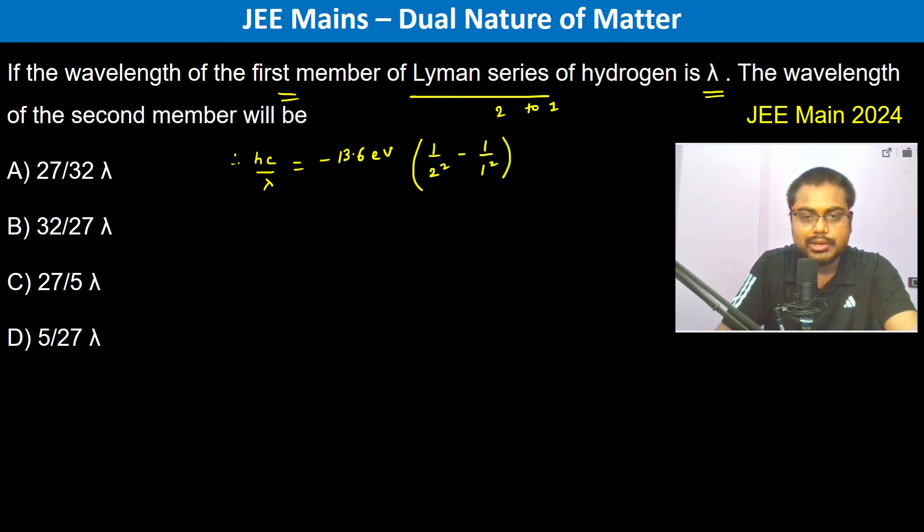This is first. The wavelength of the second member will be: we have hc by λ₁ is equal to minus 13.6 electron volt and now it's from 3 to 1, so 1 by 3 square minus 1 by 1 square.